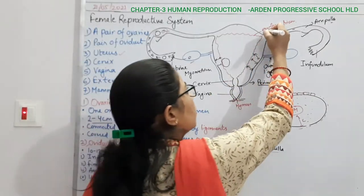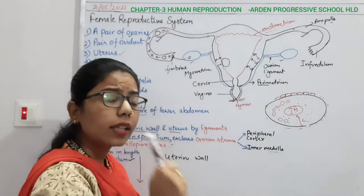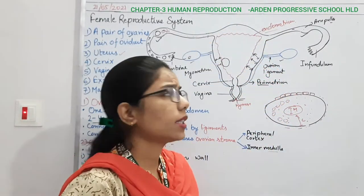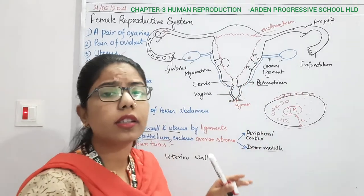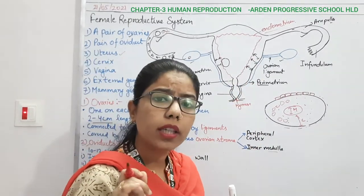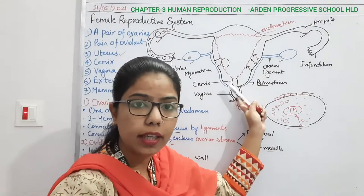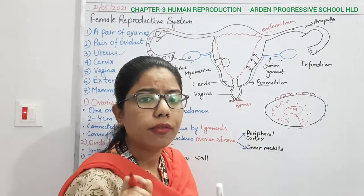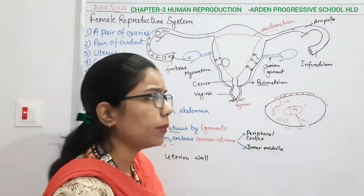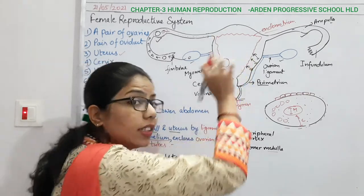The outer perimetrium layer is for protection. The myometrium is made up of smooth muscle cells, and during delivery when the baby has to be expelled, these muscles contract and relax, enabling easy delivery of the baby. The endometrium layer has varying thickness because it changes every time — during the menstrual cycle this lining gets changed.